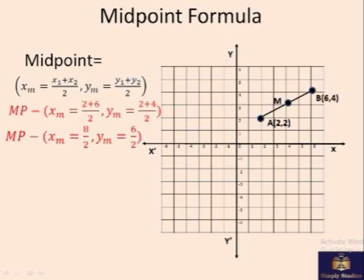So this is 8 by 2 and 6 by 2, which gives you 4 and 3, which is, as you can see, the midpoint of these two points. The x-axis is 4 and y-axis is 3.